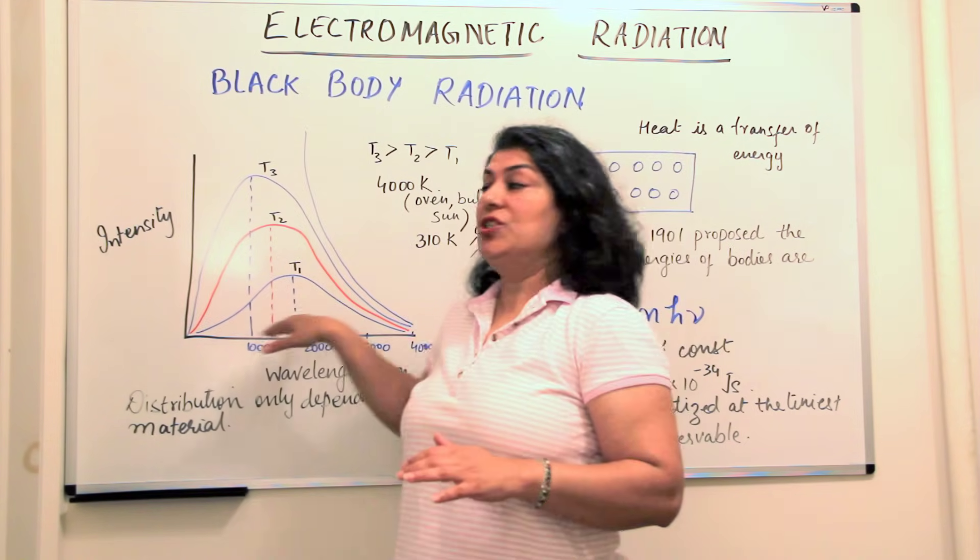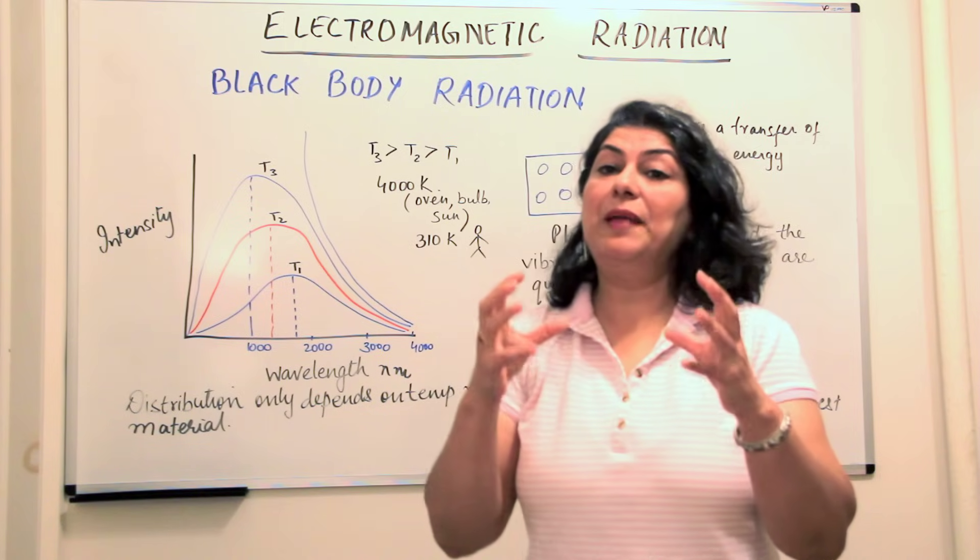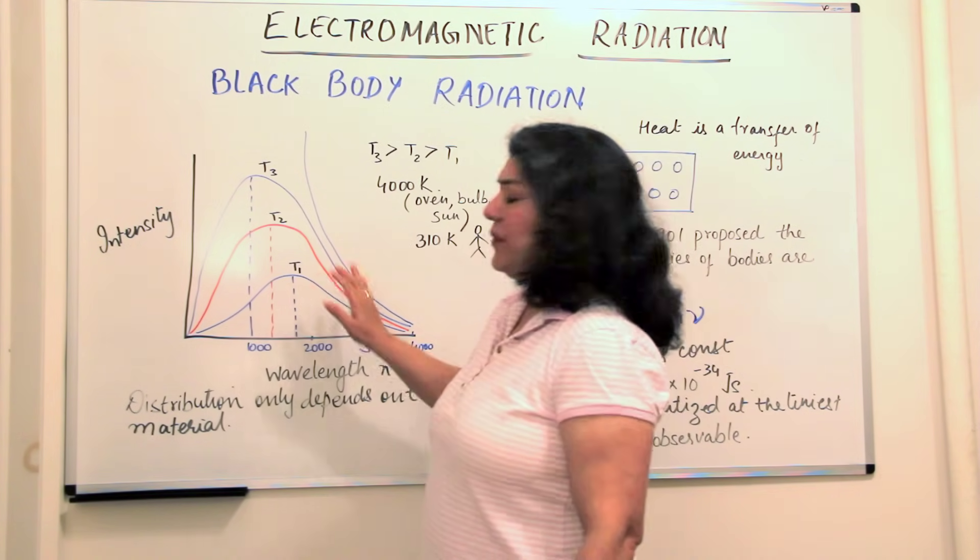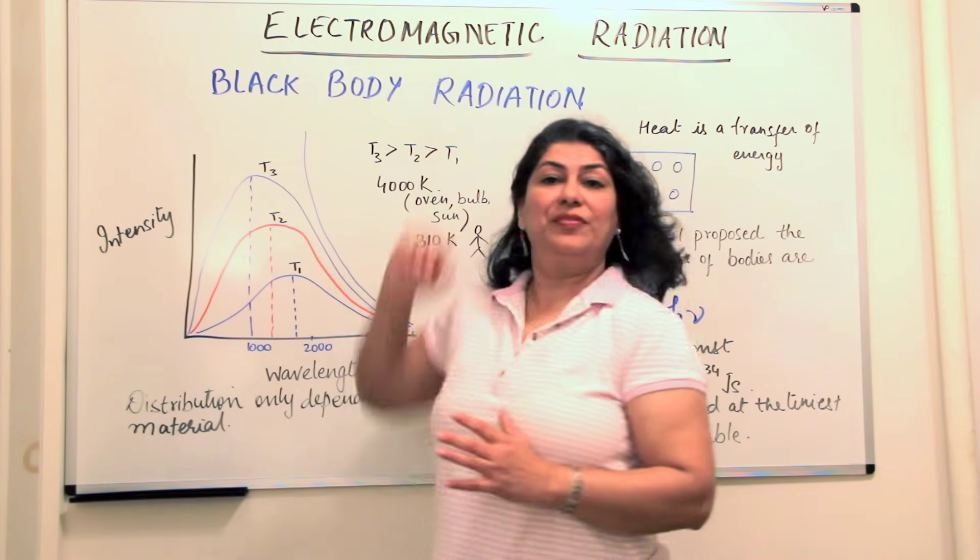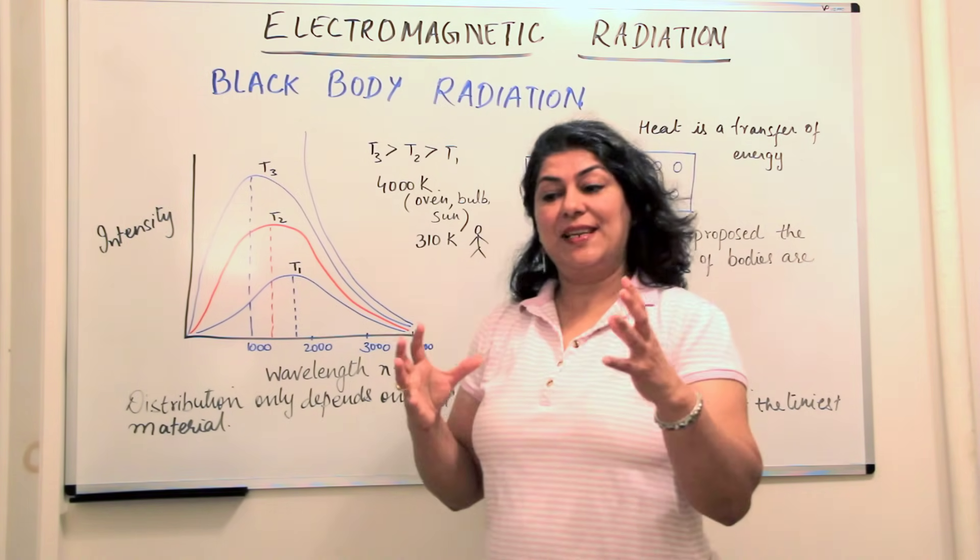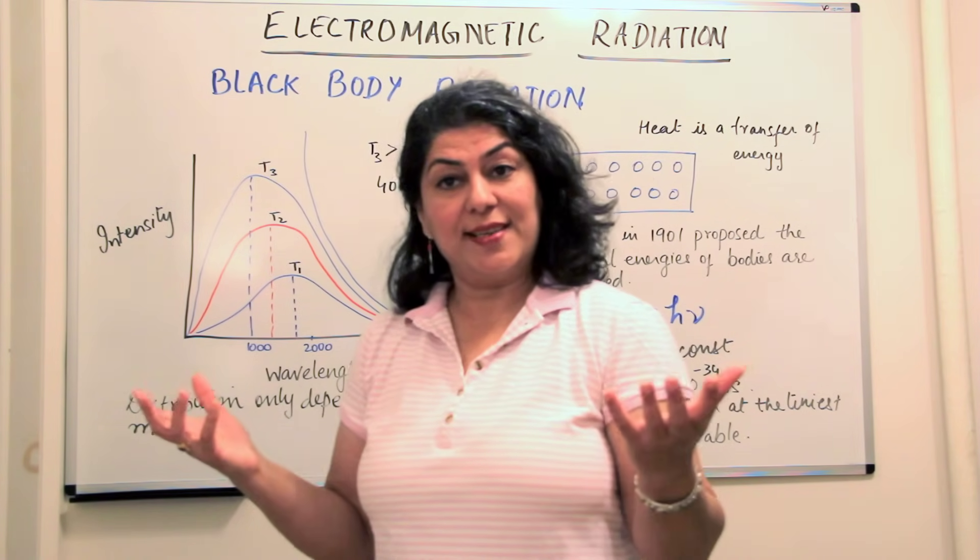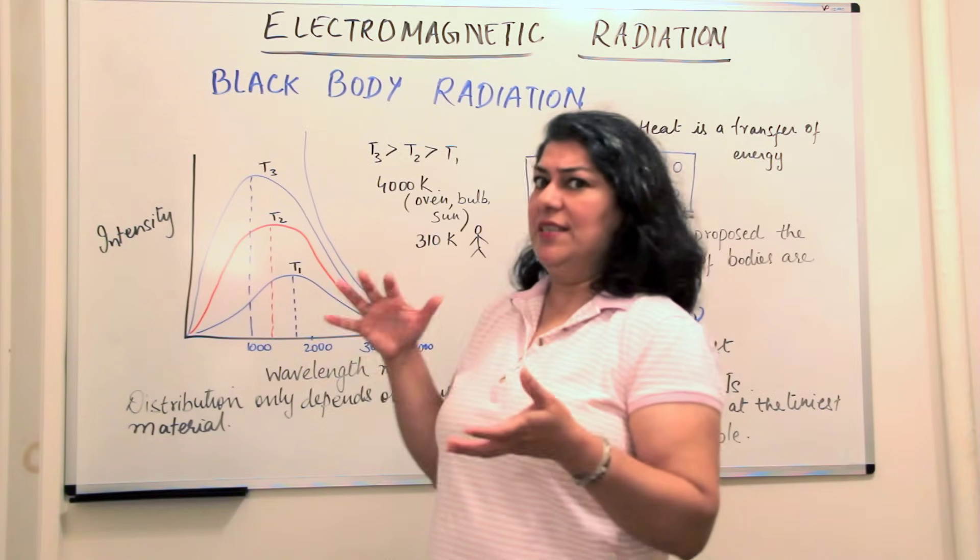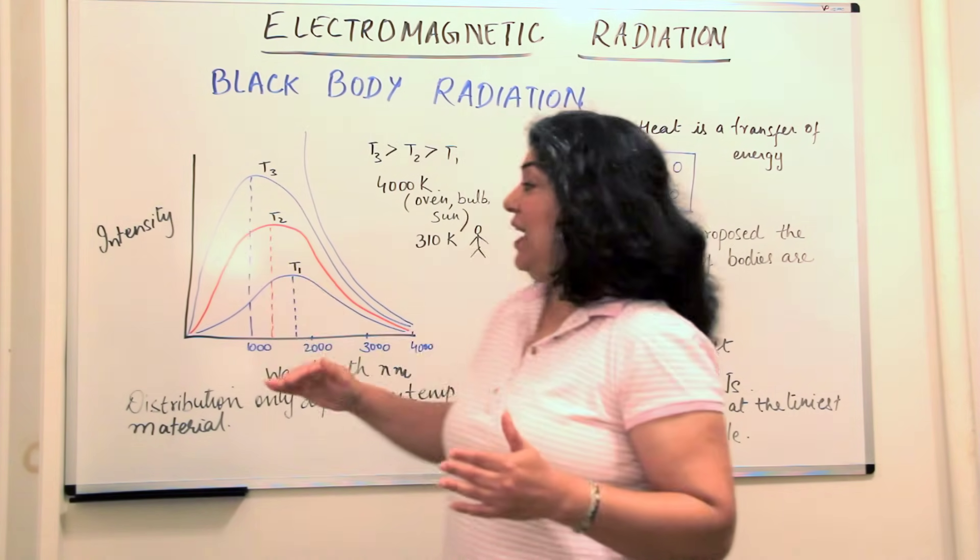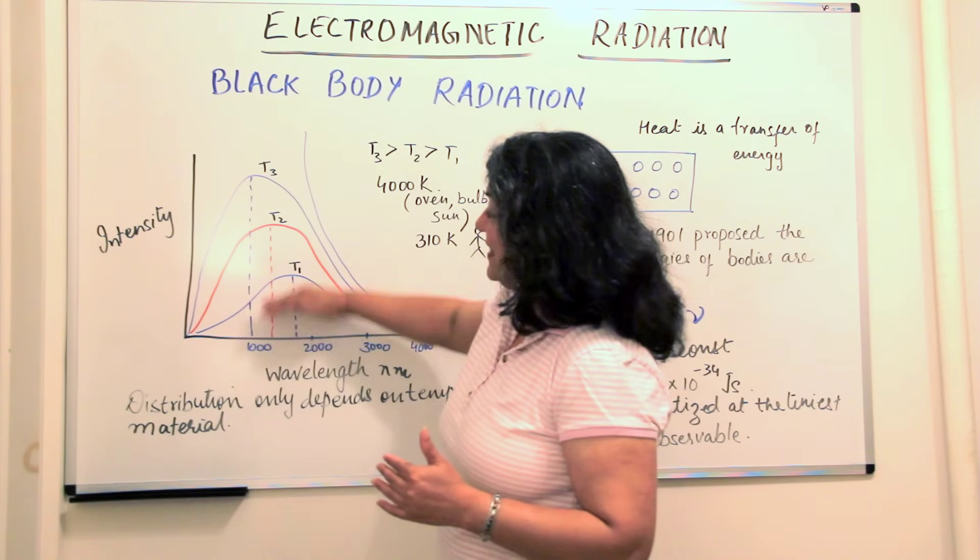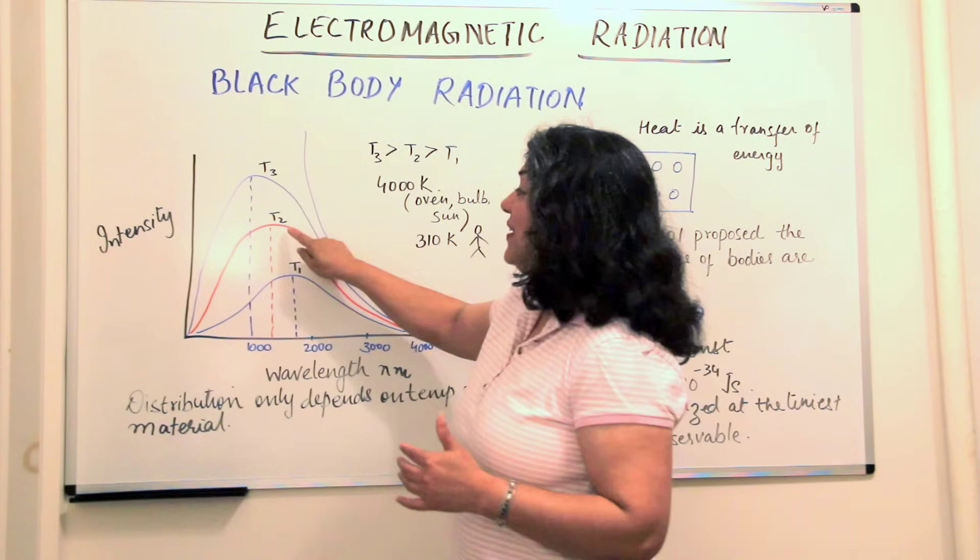When black body radiations were studied, scientists plotted graphs and found that when you raise the temperature of a black body, we get a curve. Classical physics told us that if you heat an object, the frequency of particles increases and hence wavelength decreases. This should continue decreasing, and the intensity of radiations given out was increasing with increasing temperature.